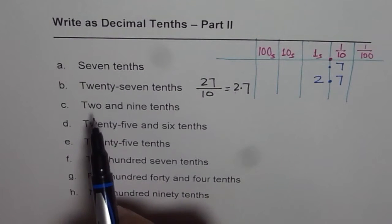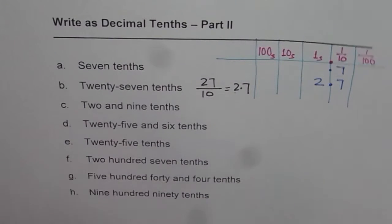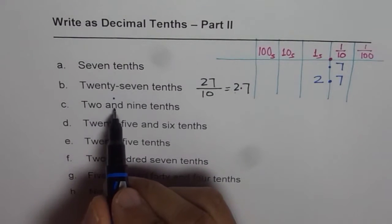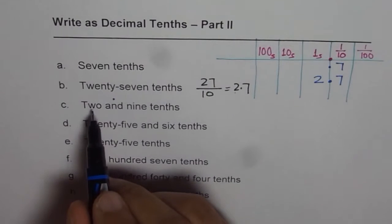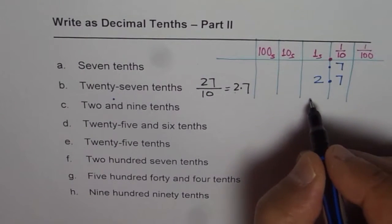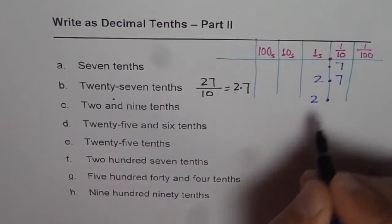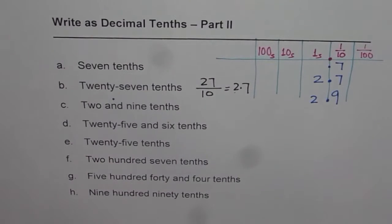Now we have another very interesting case which is two and nine tenths. Whenever we say 'and,' it means the decimal point. So two comes before the decimal point and nine tenths is afterwards. We can write this number as 2.9. I hope you get it.